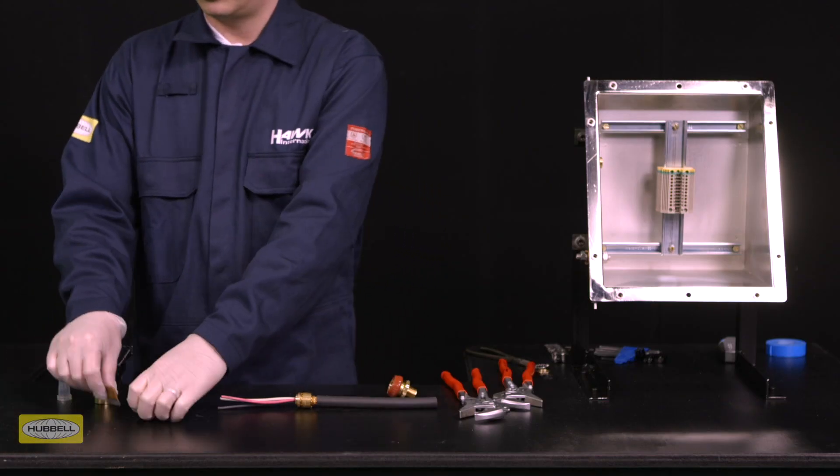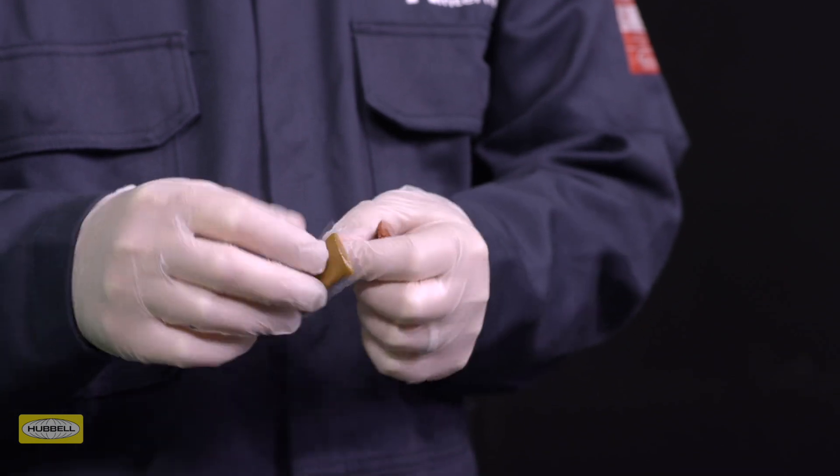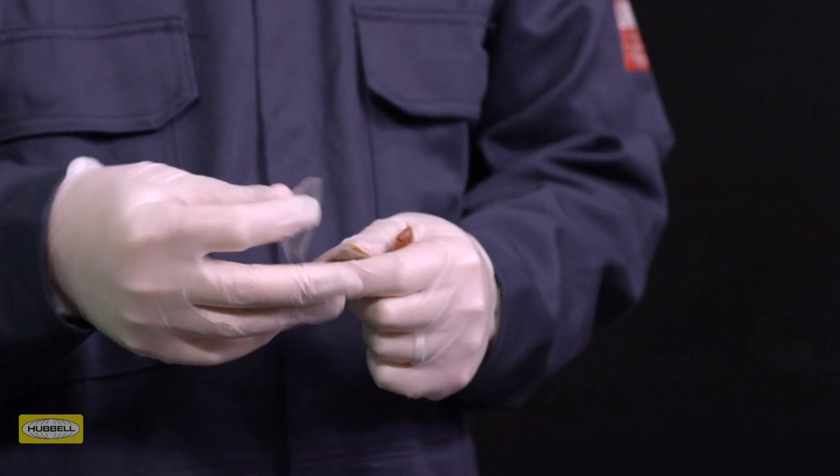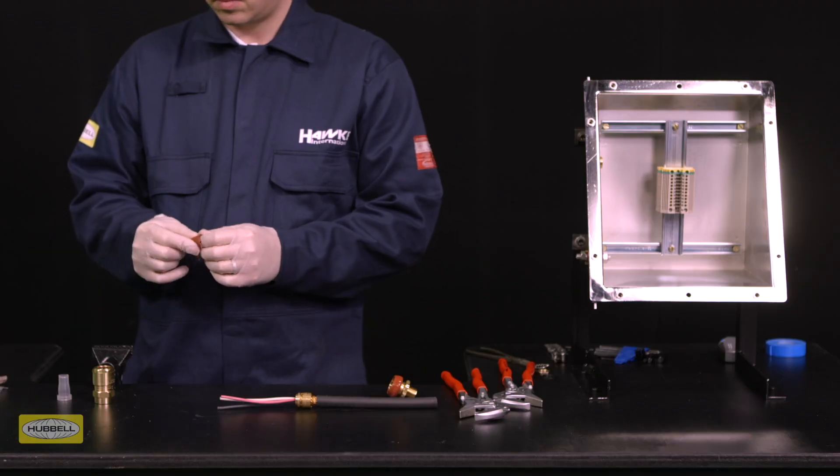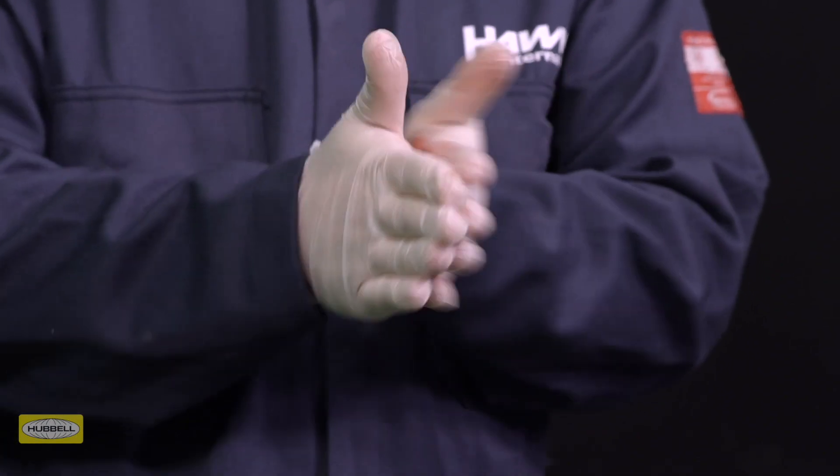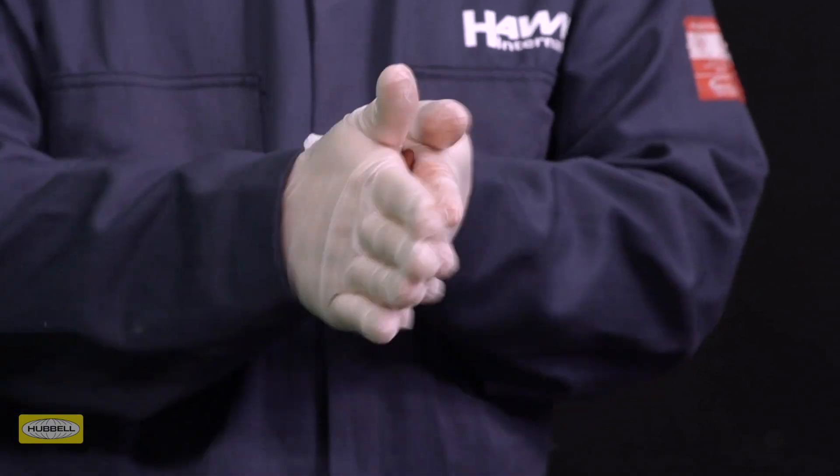Hawk Seal or QSP is supplied in a two-part package. The compound should be mixed in a one-to-one ratio until the colors have blended into one. Rolling and folding is the most effective way to achieve an even blend.